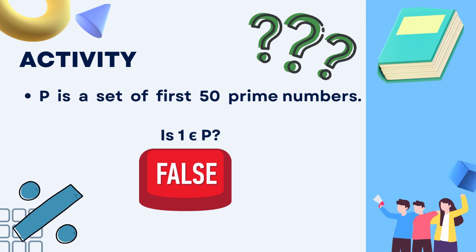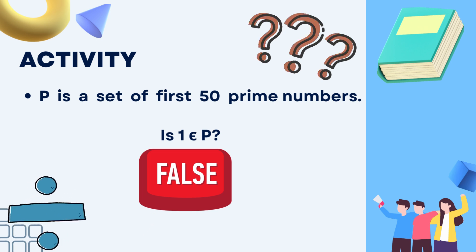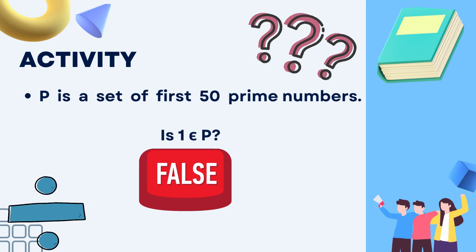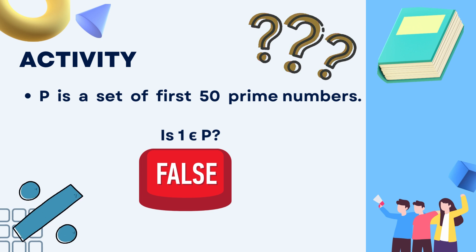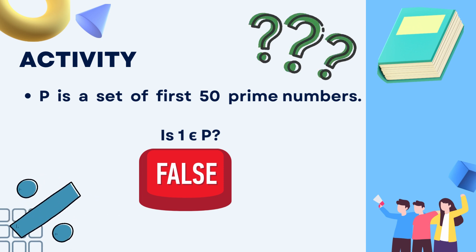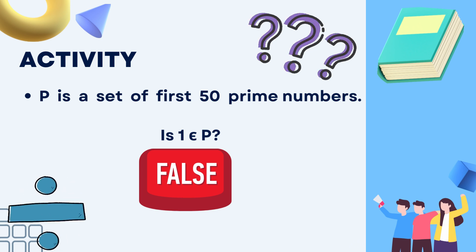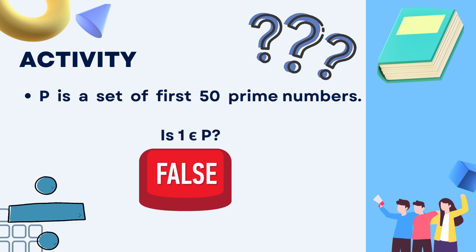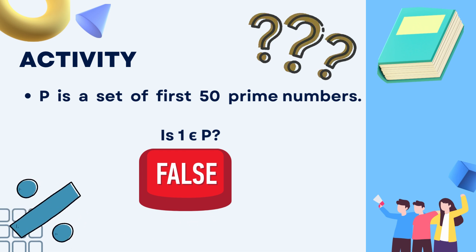True or false? As per the definition of prime numbers, 1 has only a factor of itself — it can only be divided by 1 and has no other factor. Hence, the answer is false.